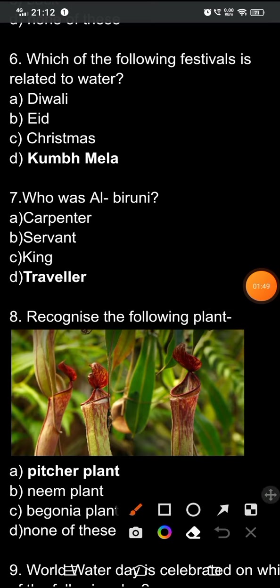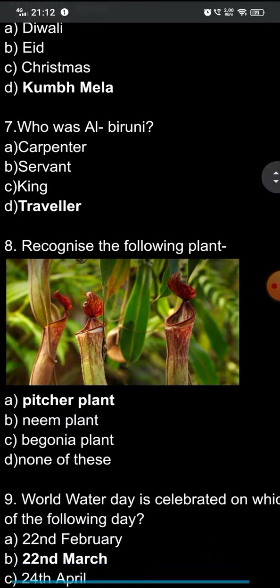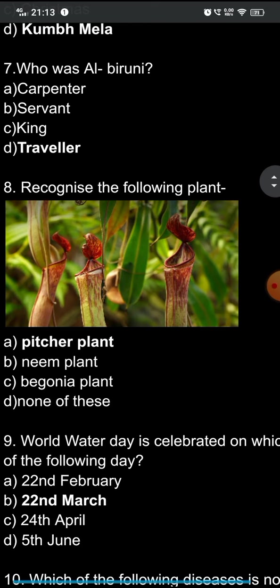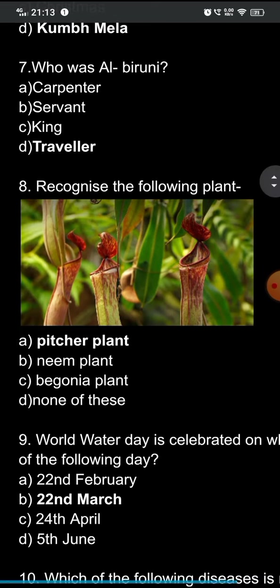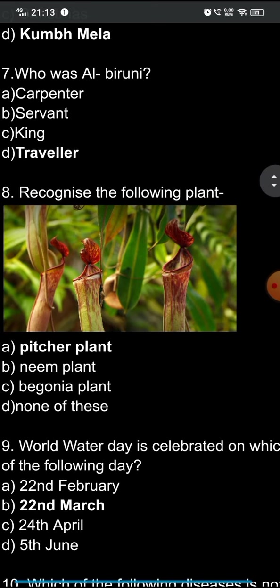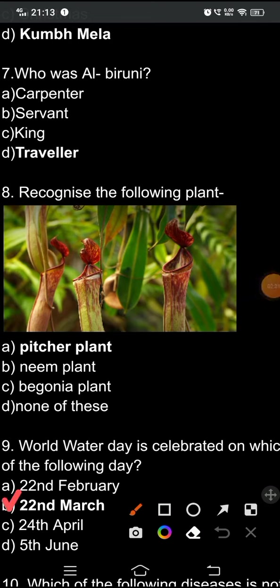Question nine: World Water Day is celebrated on which date? The options are: A) 22 February, B) 22 March, C) 24 April, D) 5 June. The correct option is B — 22 March. Every year on 22nd March we celebrate World Water Day.